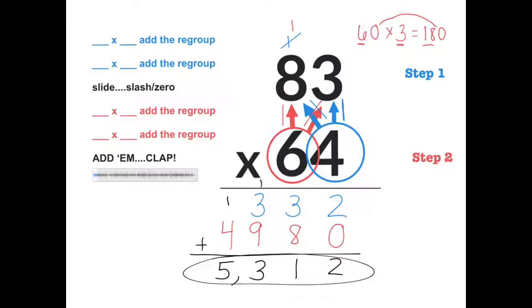One, two, ready go. Four times three, add the regroup. Four times eight, add the regroup. Slash, zero. Six times three, add the regroup. Six times eight, add the regroup. Add them! Great job! Let's try it!